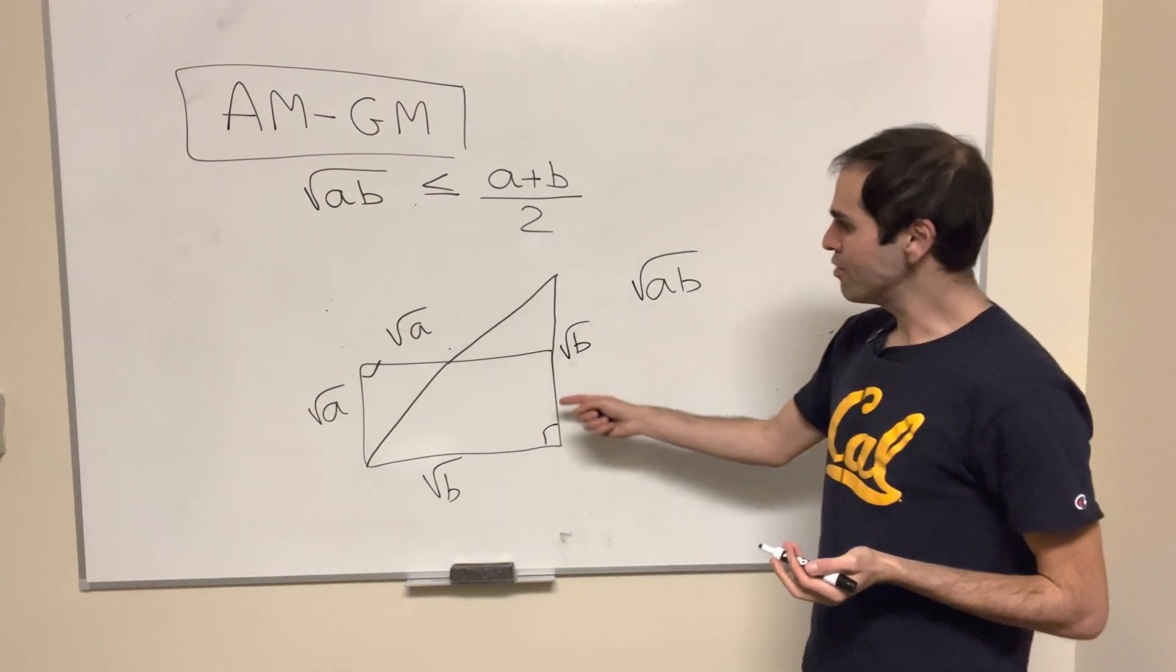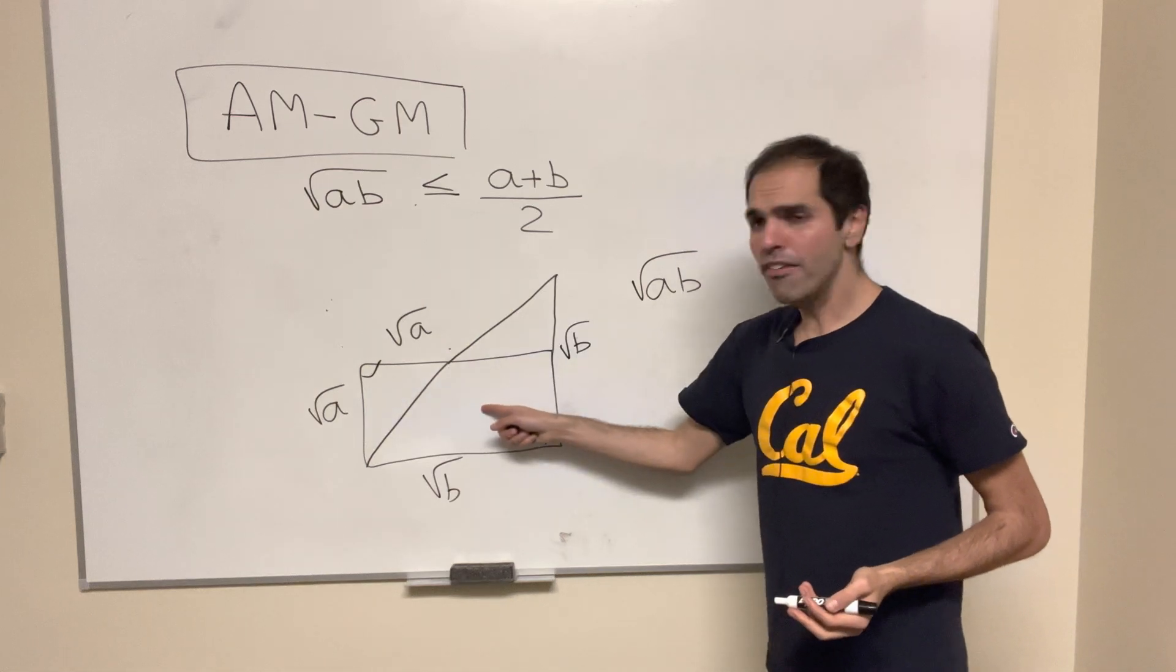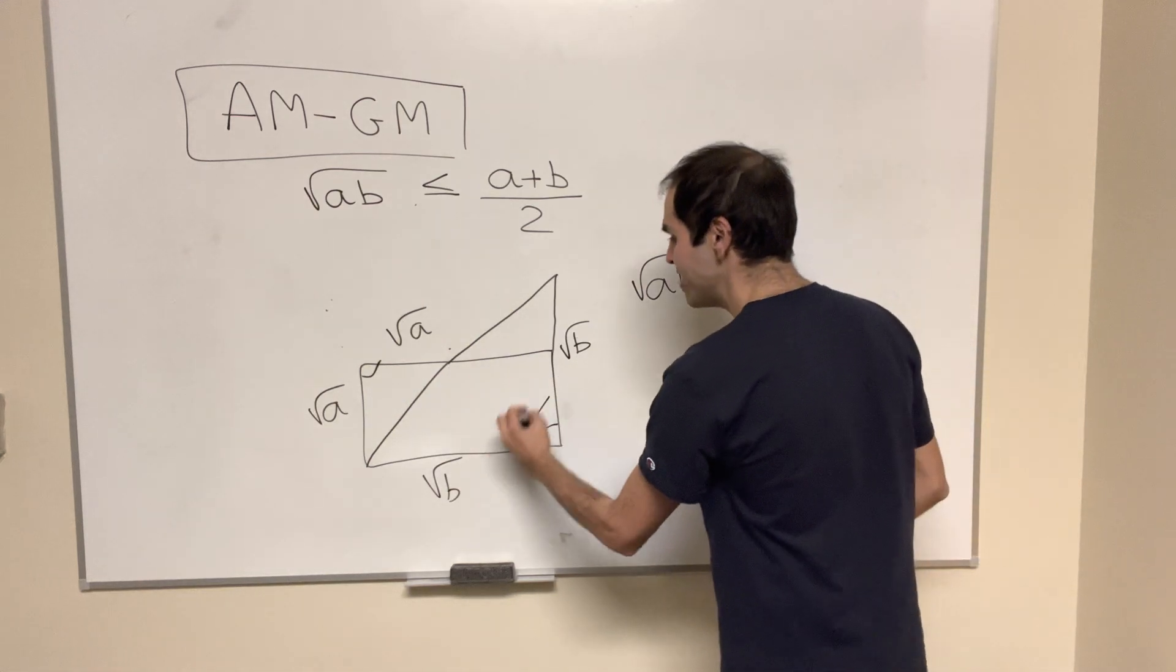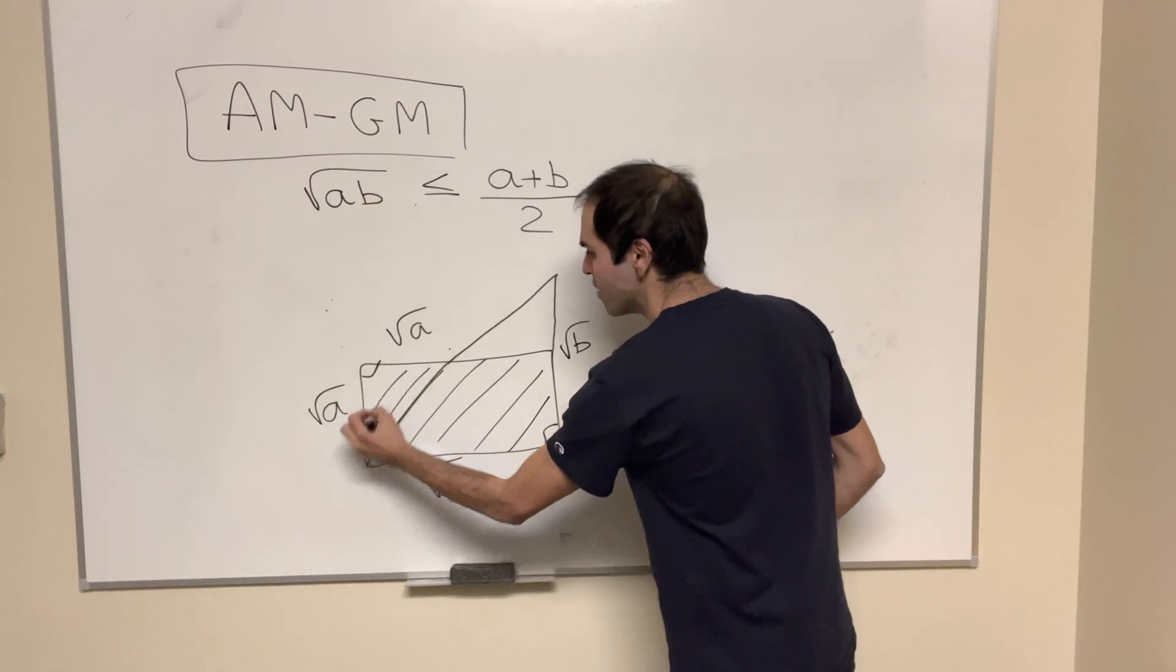And now notice the following. On the one hand, the area of the rectangle is less than or equal to the sum of the areas of the triangles.